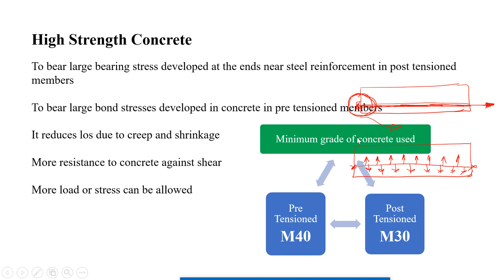A very important point: the minimum grade of concrete according to IS specifications for pre-tensioned members is M40, and for post-tensioned members is M30. This is an important fact for GATE examinations and interviews — minimum grade for pre-tensioning is M40 and for post-tensioning is M30.